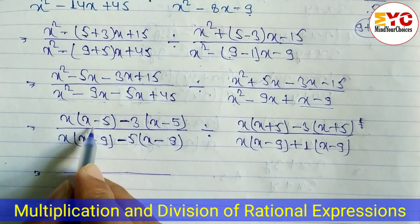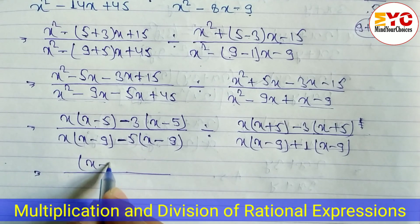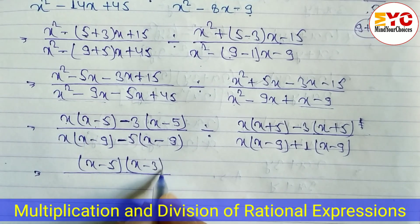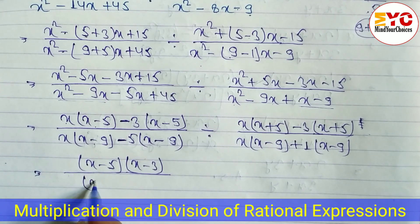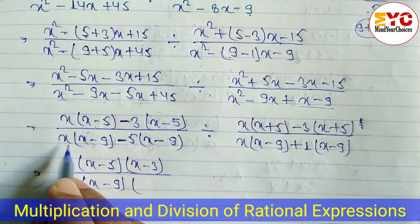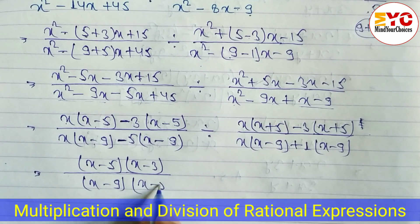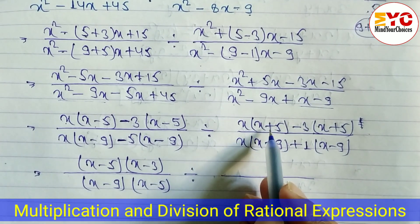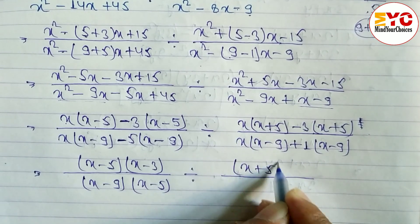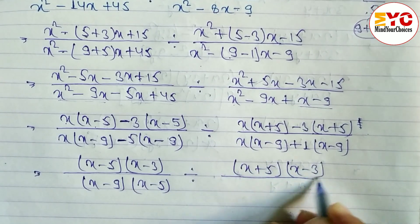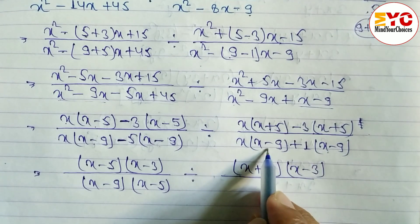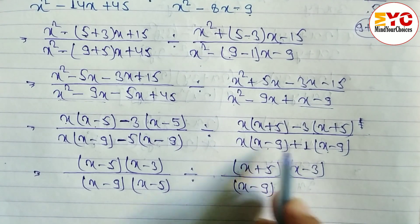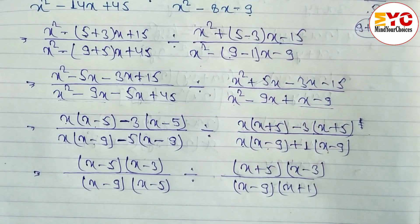Now (x − 5) appears twice in the first fraction numerator, so we take (x − 5) as common and write (x − 3). In the denominator (x − 9) appears twice, so take (x − 9) as common, remaining (x − 5), divide. For the third expression (x + 5) is common, remaining (x − 3). For the fourth, (x − 9) is common, remaining (x + 1).